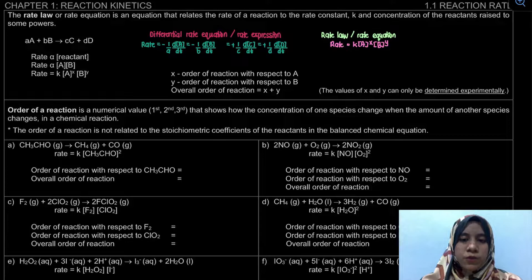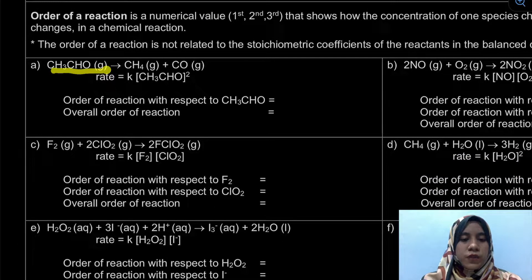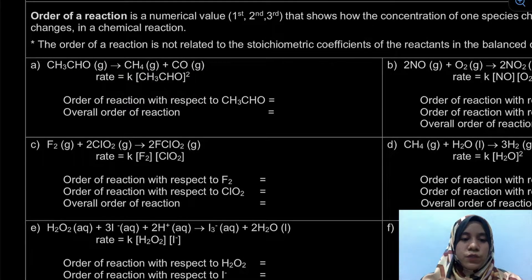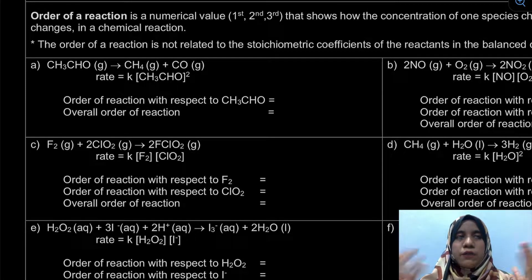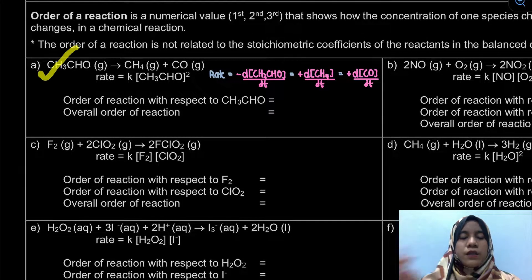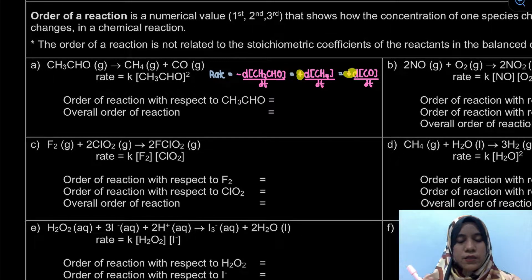Let's look at example A. We have CH₃CHO as our reactant forming products CH₄ and CO gas. The rate law is given: rate = K[CH₃CHO]². This is our rate law. Just to remind you, the differential rate equation for this reaction would use negative for the reactant — since the coefficient in front of the species is 1, we do not include 1 over 1. For the product, it must have a positive sign. That is the differential rate equation.